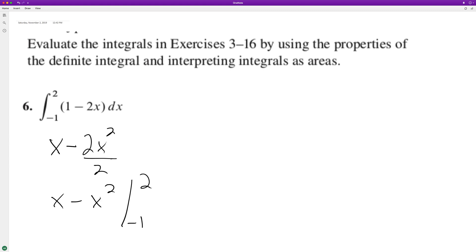And we're taking this from negative one to two. So we plug this in, we get two minus four minus, plug in negative one, negative one minus negative one squared is just one. So we get negative two minus negative two. This becomes negative two plus two, which is equal to zero.